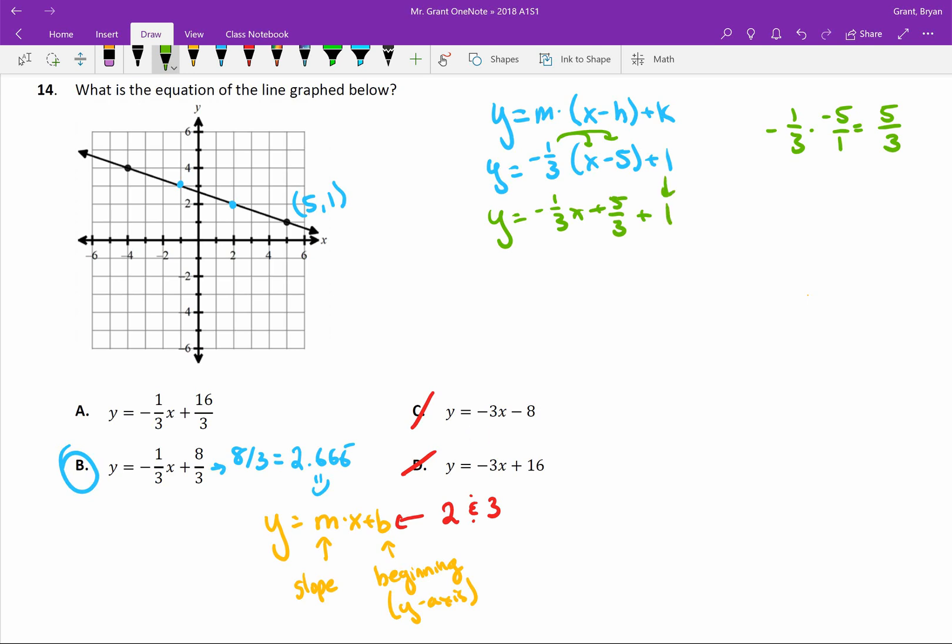Alright, well we're getting closer then, but we still have two like terms that we need to combine, this 5 thirds and this 1, and I'll do that over here as well. 5 thirds plus 1 over 1, we can't add yet, we need common denominators, so we multiply by 3 over 3 to get 5 thirds plus 3 over 3, and that gives me 8 thirds. So when I combine these two together, I got a positive 8 thirds, and we end up with y equals negative 1 third x plus 8 thirds, which should, I hope, match B. Check that out.